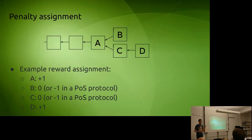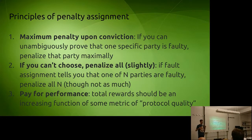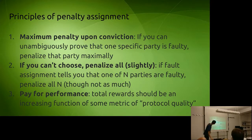Why is this better under the coordinated choice model? Property three — pay for performance — is essentially a synonym for working well under the coordinated choice model. In the coordinated choice model, a coalition cares about its total revenues, and total revenues should be an increasing function of protocol quality. So the coalition is incentivized to make protocol quality as high as possible — to have as few protocol faults as possible. Benefits: if we know someone is faulty they'll be punished; innocence may be punished too but we can analyze griefing factors and bounds; and selfish mining issues are easier to resolve.